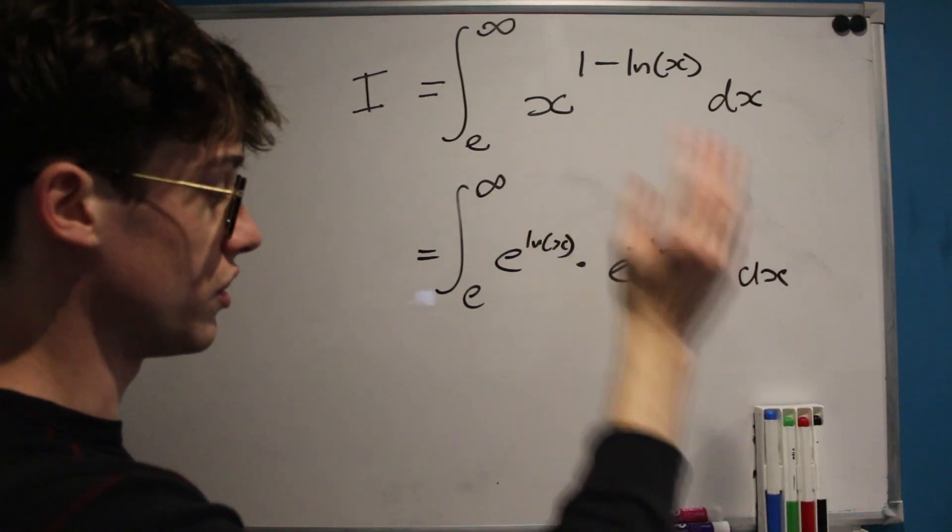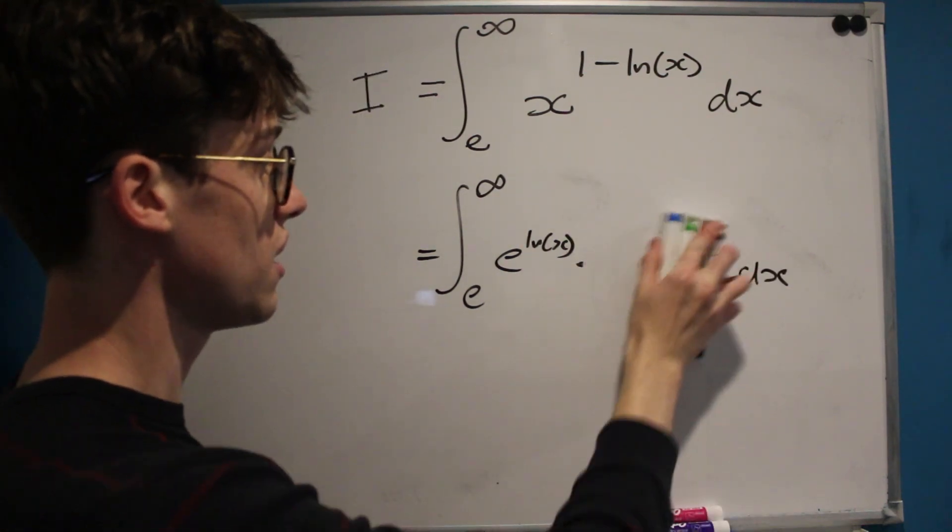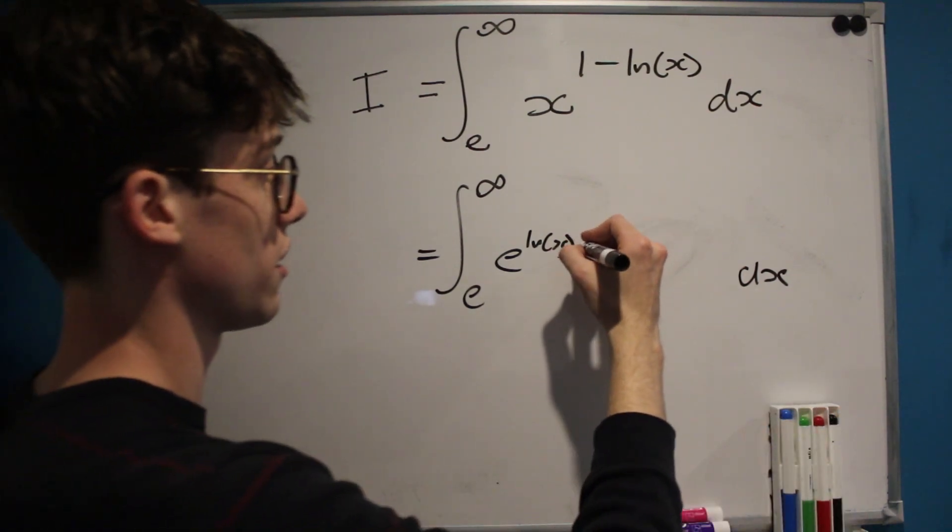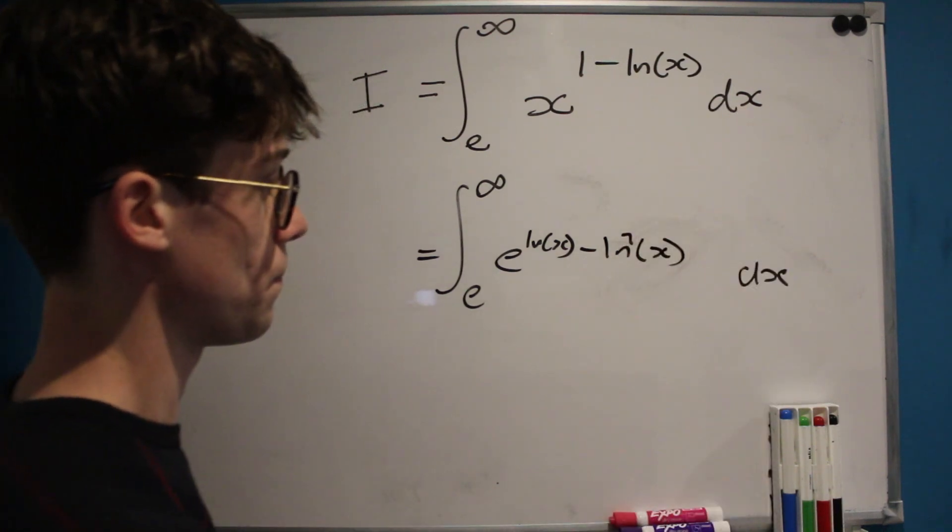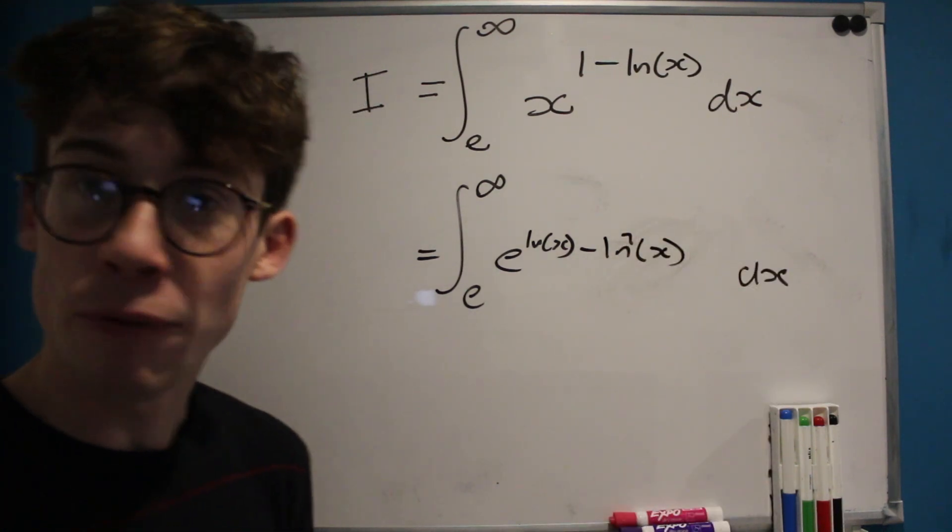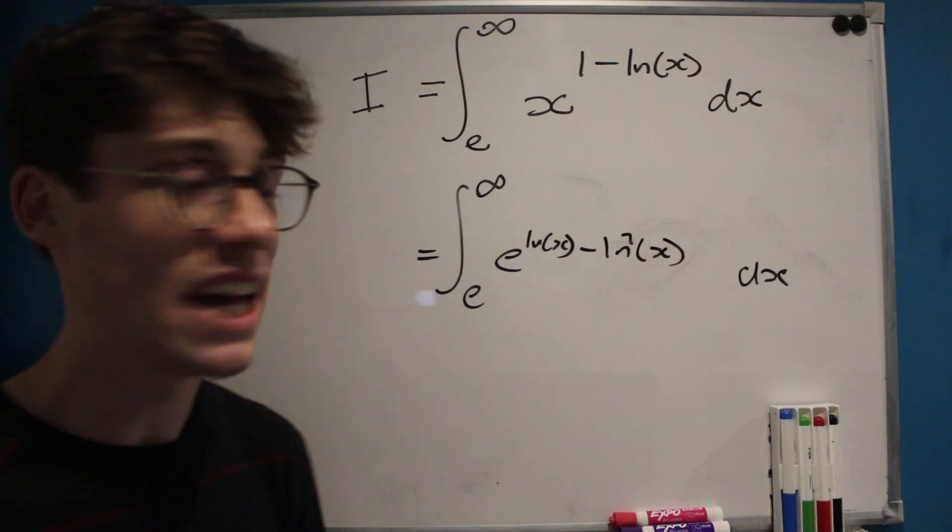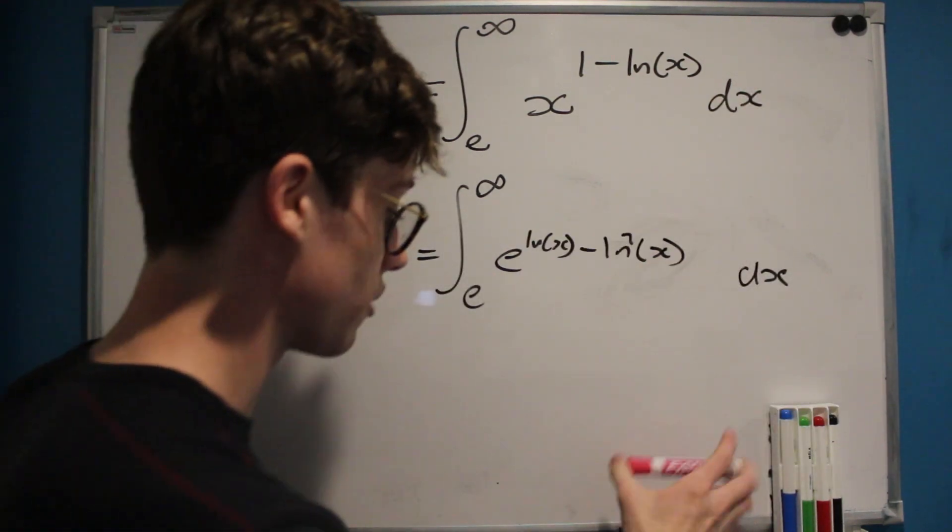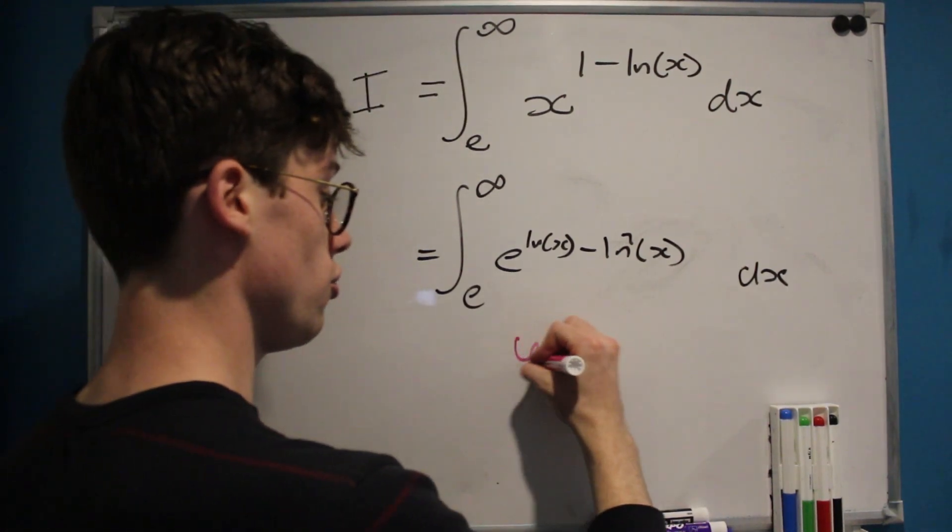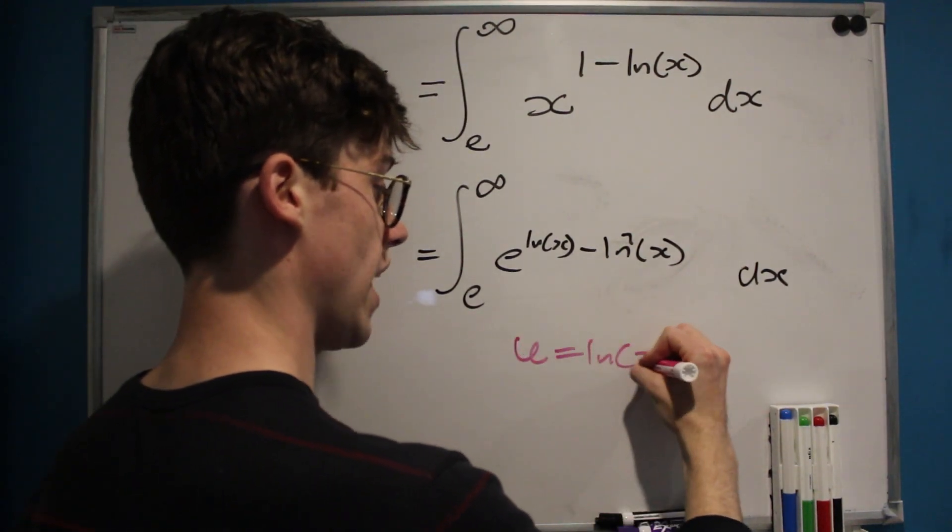And now both of our terms in the integrand have the same base, and so we can just simplify this into e to the ln x minus ln squared x. And given that we have got this lower bound of e, and that we've got lots of natural logs in our integrand, it definitely seems like a smart next step to make the substitution u equals ln x.